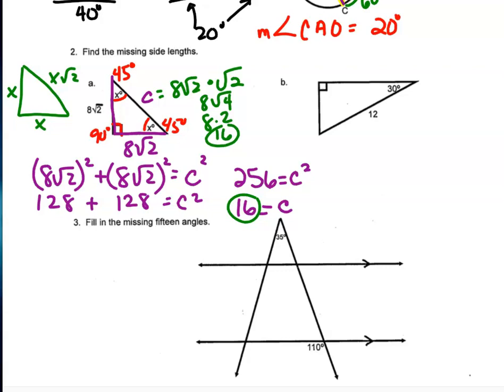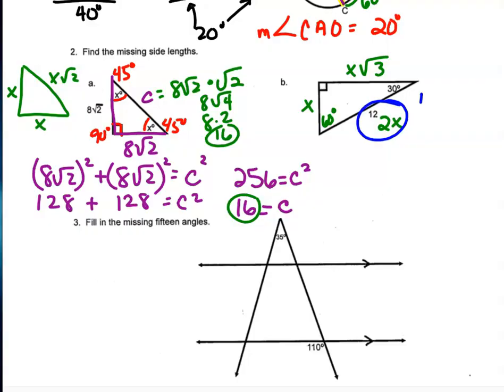The second triangle is a right triangle with one angle of 30 degrees, making it a 30-60-90 triangle. The short leg (opposite the smallest angle) is x, the hypotenuse is 2x, and the long leg is x√3. Since the hypotenuse is 12, we have 2x = 12, so x = 6. The short leg is 6, the longer leg is 6√3, and the hypotenuse is 12.